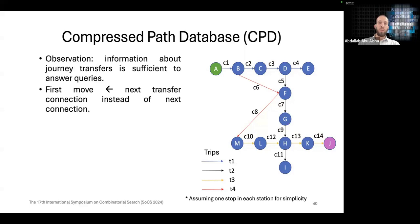However, we can do better. We have an observation which is the information about journey transfers is sufficient to answer queries. So the intermediate stops, we don't really care about the intermediate stops. We just care about the transfer stops or transfer stations within a journey. Accordingly we redefine the first move in terms of the next transfer connection instead of next connection.